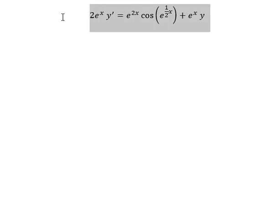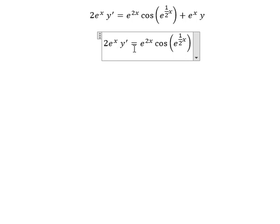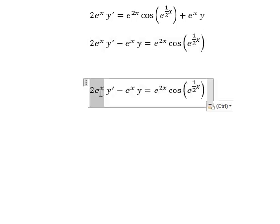Hello everybody. Today I want to show you how to answer this one. I will put this one on the left side. So we have negative e to the power of s times y. Next we need to divide both sides by this.